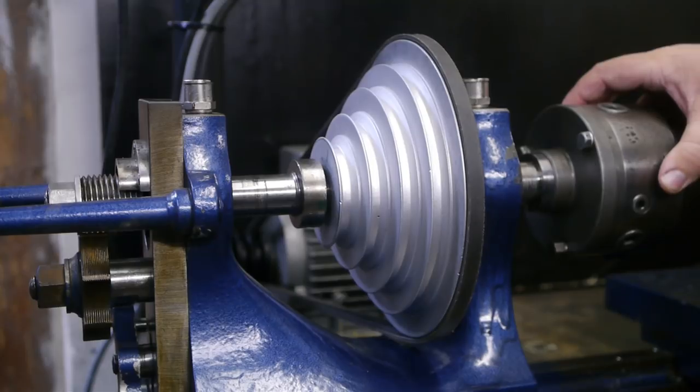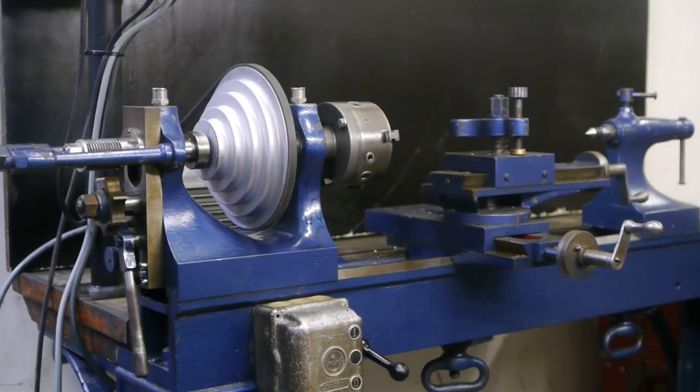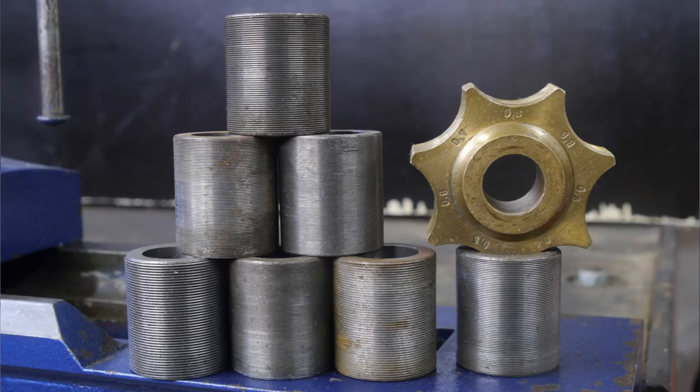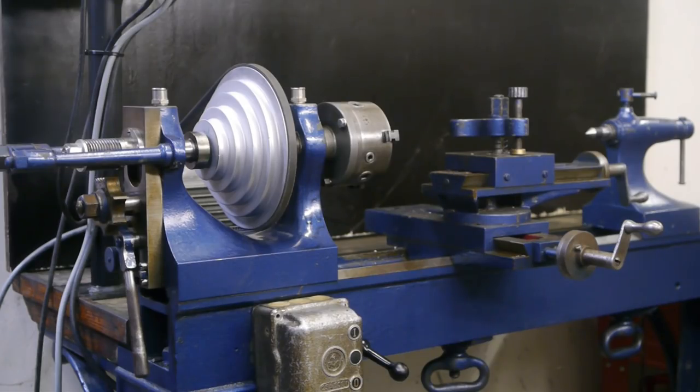A while back I got asked to demonstrate the thread cutting capabilities in a YouTube video. Unfortunately, I don't have many useful templates—most of them are for very fine metric threads. But I do have an 8 TPI template, and that's the same thread as on the spindle nose, so I thought let's try and make a spindle nose protector.